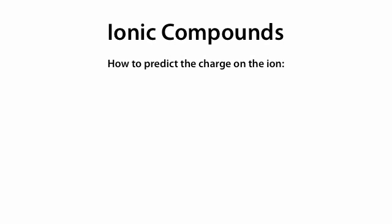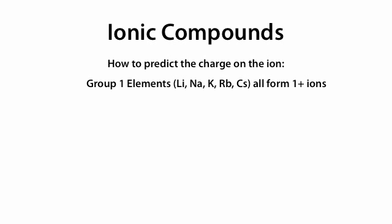So if we have an element, how do we predict the charge an ion of that element will have? Group 1 elements, which include Li, Na, K, Rb, and Cs, all form 1+ ions.